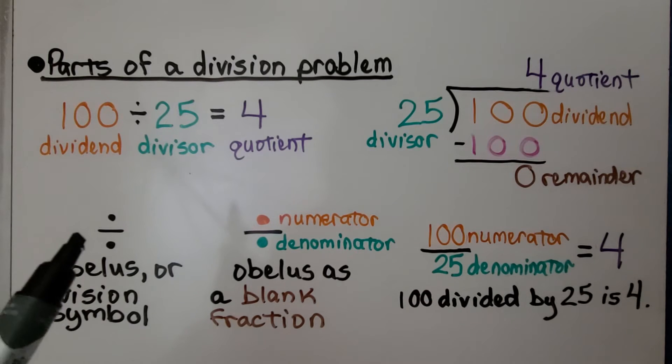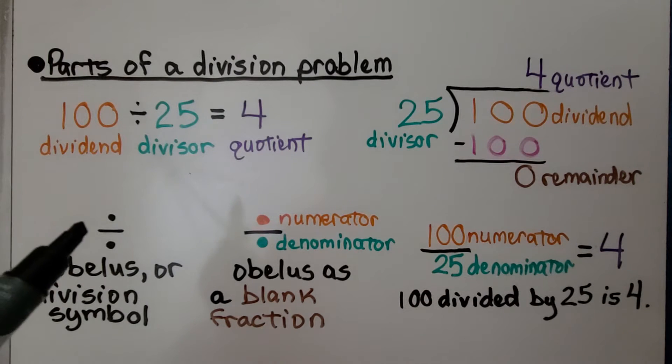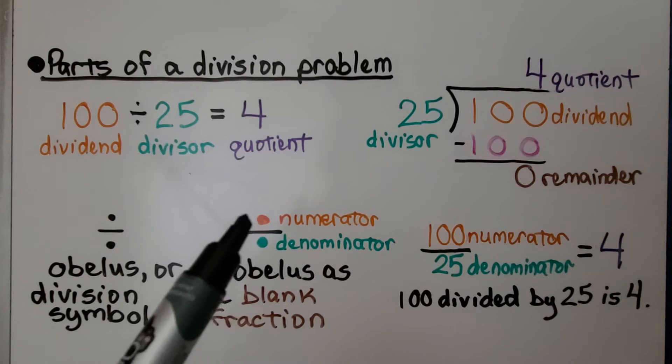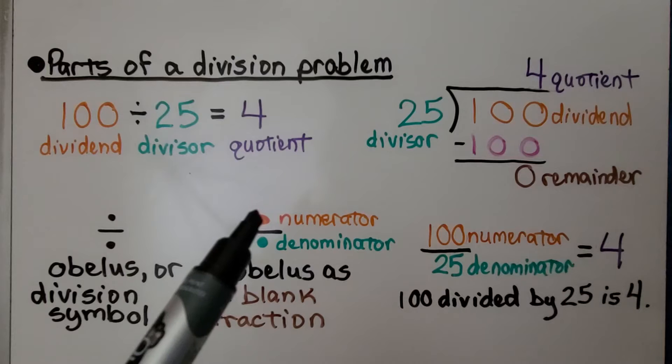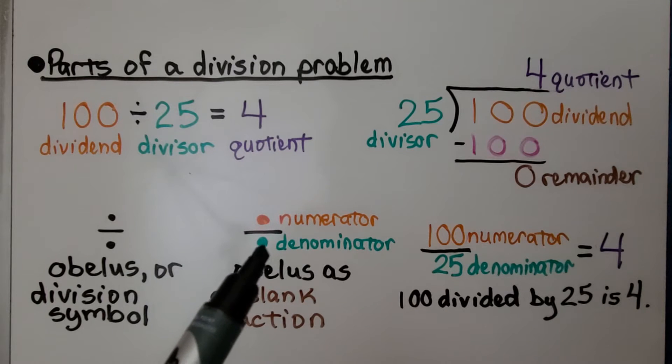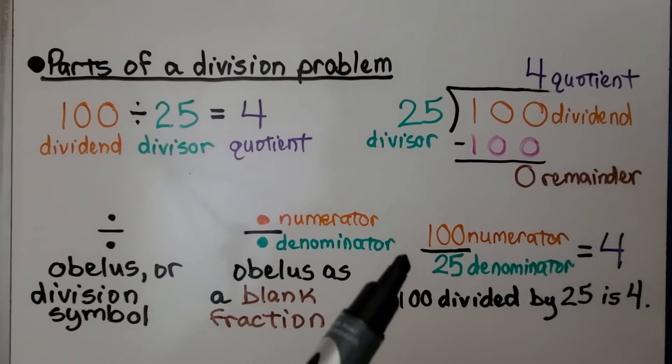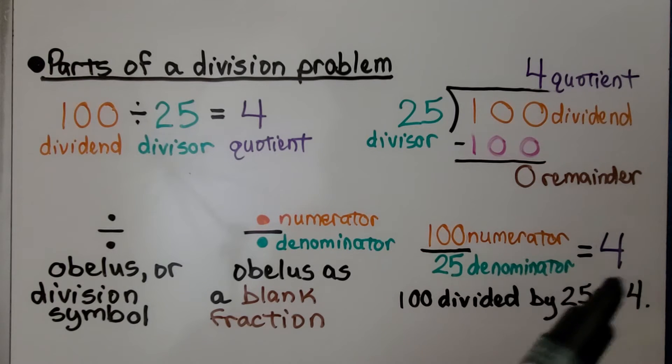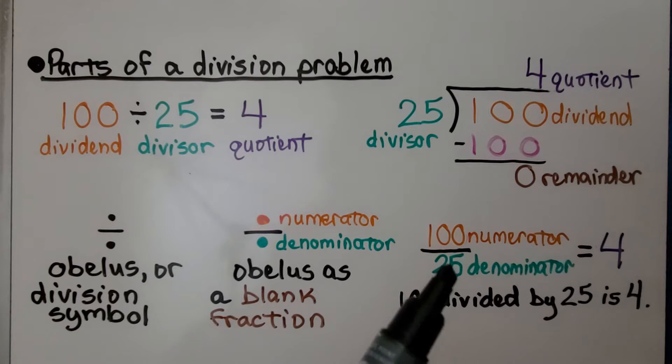This division symbol is also called an obelus, and an obelus is actually a blank fraction. Think of that. We've got our fraction bar, and the dot on top can be thought of as the numerator, and the dot on the bottom can be thought of as a denominator. So, 100 over 25, we have our numerator and our denominator, is equal to 4 because 25 fits into 100 four times.